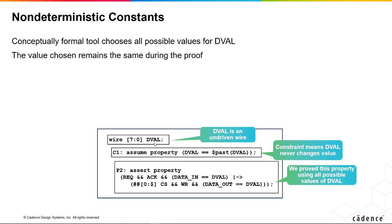We've got an undriven wire here. In formal, anything that's undriven by RTL, the tool will drive it to whatever value it likes on any cycle it wishes. So we've got DEVAL, which is an undriven wire, which is 8 bits. We've got an assumption here which says that value is always equal to its plus value.